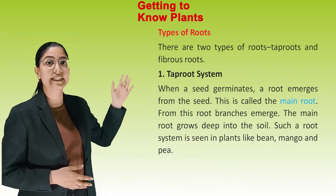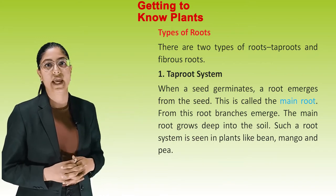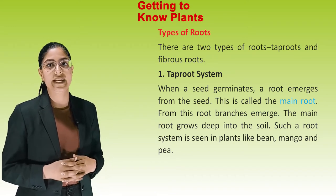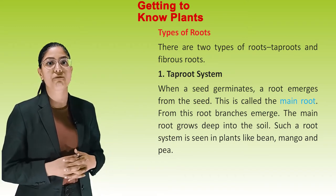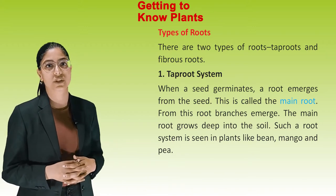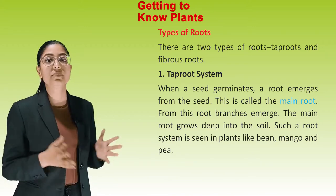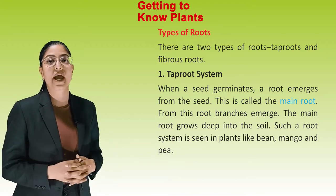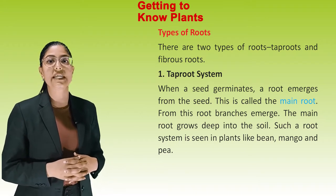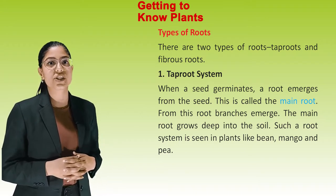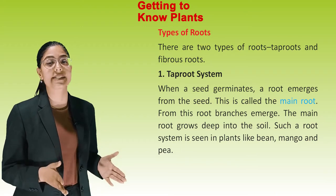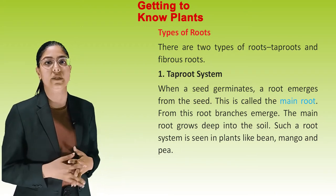Taproot System — when a seed germinates, a root emerges from the seed; this is called the Main Root. From this root, branches emerge. The main root grows deep into the soil. Such a root system is seen in plants like Bean, Mango and Pea.